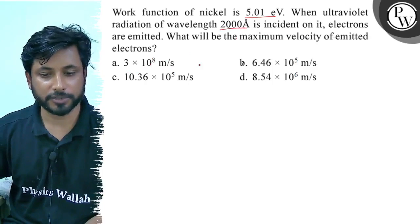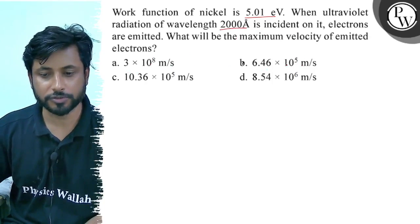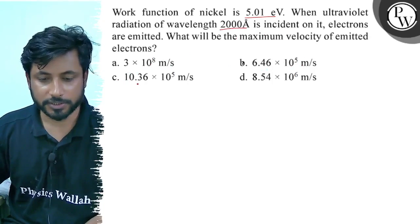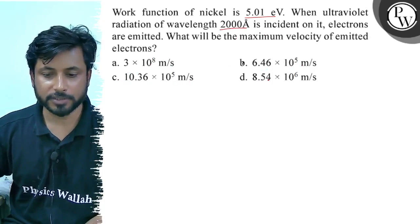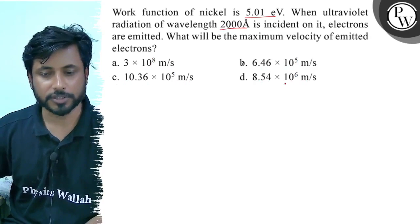Option A: 3 × 10^8 meter per second. Option B: 6.46 × 10^5 meter per second. Option C: 10.36 × 10^5 meter per second. Option D: 8.54 × 10^6 meter per second.